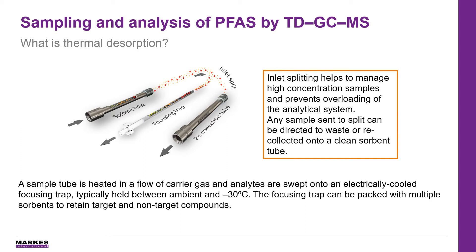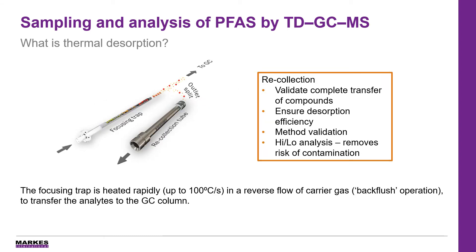For this study we used an off-the-shelf focusing trap typically used for air monitoring applications. Subsequent rapid heating of the TD instrument's internal focusing trap in a reverse flow of carrier gas transfers the volatile and semi-volatile organic compounds to the GC column in a narrow band, and this is what ensures those sharp peaks and a high level of sensitivity. This back-flush operation of the tubes and the traps makes elimination of water via dry purge procedure an extremely effective water management tool, which improves sensitivity and extends instrument and column lifetime.